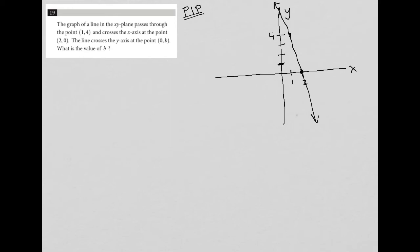The next sentence says the line crosses the Y-axis at the point 0, B. So I know up here must be B. What is the value of B?